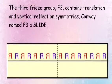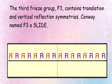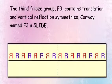The third freeze group, F3, contains translation and vertical reflection symmetries. Conway named F3 a slide.